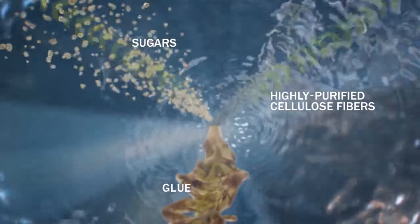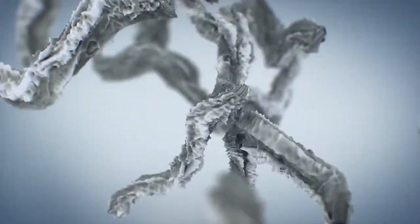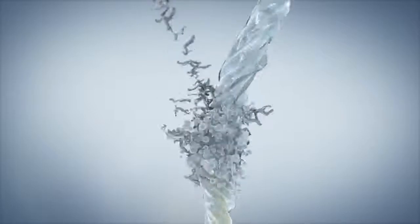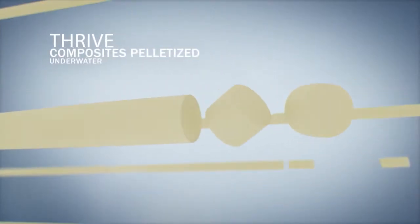Sugars and glues are removed for use in other products. The refined cellulose fibers become Thrive, providing plastic composites with the strength and reinforcement found in a tree.